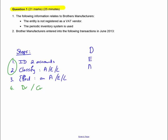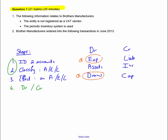I'm going to teach you two acronyms: DEAD and CLICK. Accounts that increase with debit entries are Expenses, Assets, and Drawings. Accounts that increase with credit entries are Liabilities, Income, and Capital. Owner's equity will decrease with expenses and drawings — that's why they are on the debit side. Whereas income and capital increase owner's equity in a positive way. So while the account will be debited, owner's equity will be decreasing.